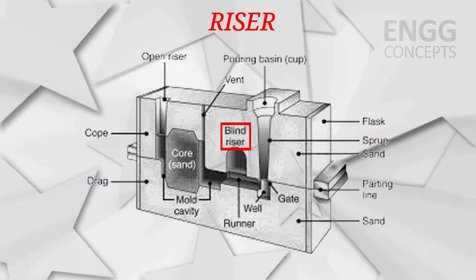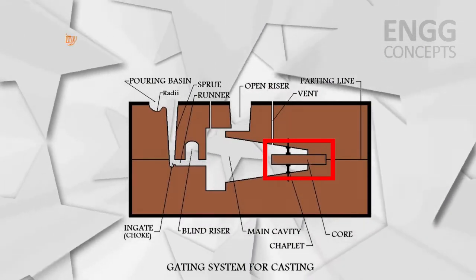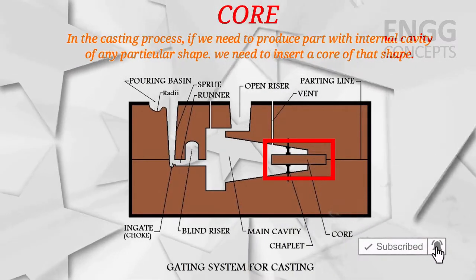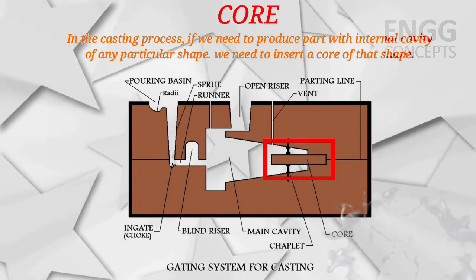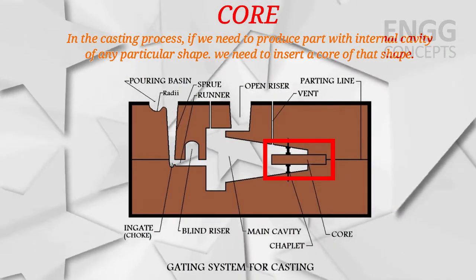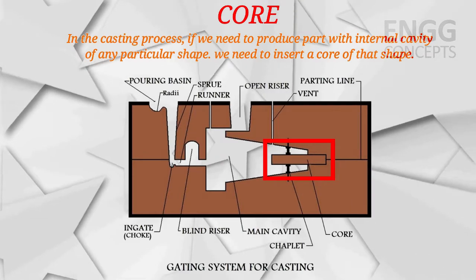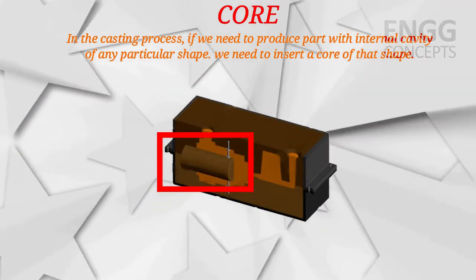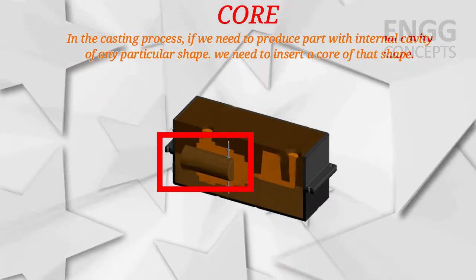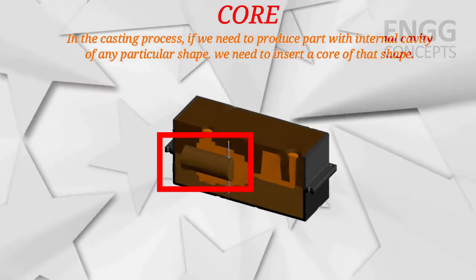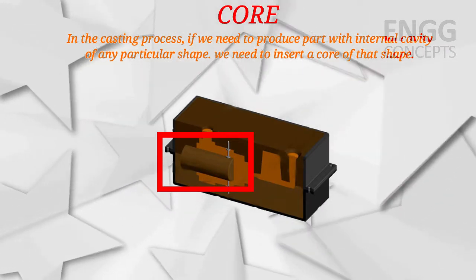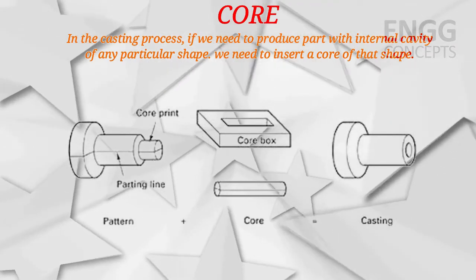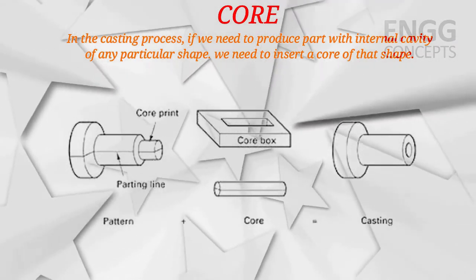If we need to produce a part with a hole or an internal cavity of a particular shape, we need to insert a core of that shape. The core prevents molten metal from entering that region. The advantage of a core is that it allows production of parts with internal cavities of desired geometry, eliminating the need for additional machining operations to create the internal cavity.